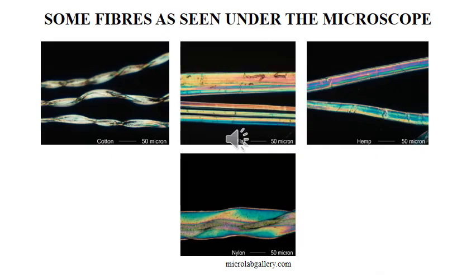These are examples of some fibers as seen under the microscope — cotton, flax, hemp, and nylon. You can see the helical or twist-like nature of the cotton fiber under the microscope, while flax is straight, and nylon is not as twisted as cotton.